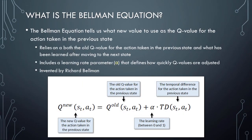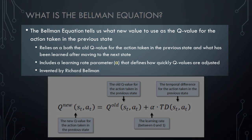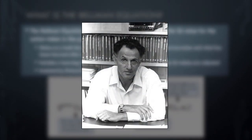The last equation we'll look at is called the Bellman equation, which is easily the most famous equation in all of reinforcement learning. The Bellman equation is so important because it tells us exactly what new value to use as the Q value for the action taken in the previous state. The Bellman equation relies on both the old Q value for the action taken in the previous state, as well as what the AI agent has learned after moving to the next state. It also includes a learning rate parameter, alpha, that defines how quickly Q values are adjusted. The Bellman equation was invented by Richard Bellman, an award-winning applied mathematician.